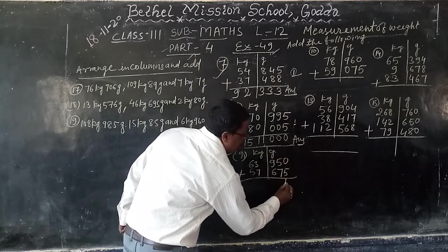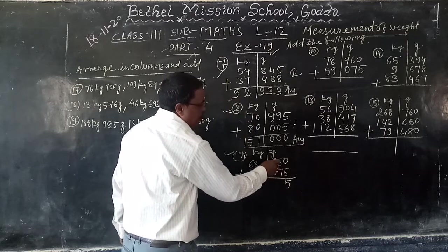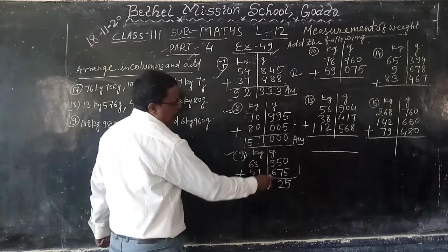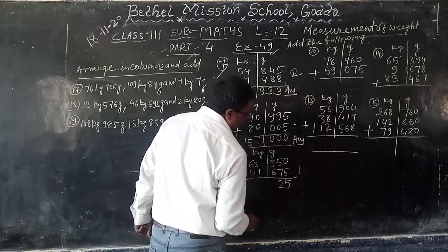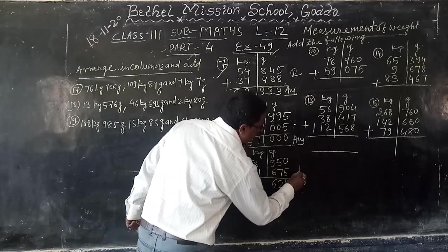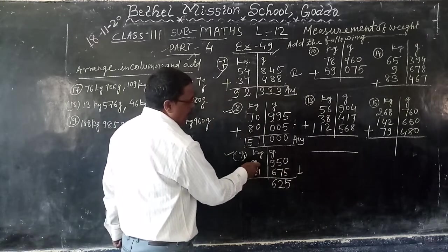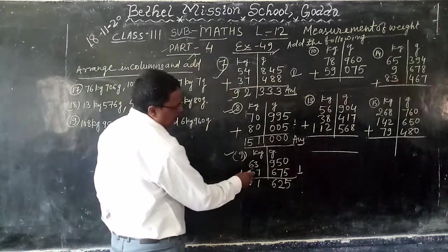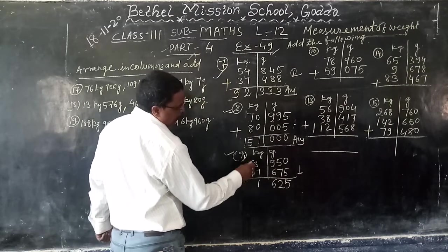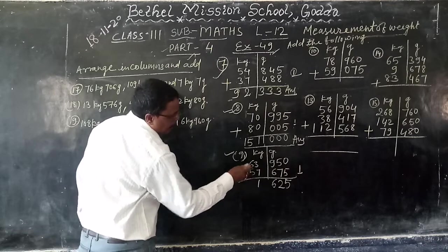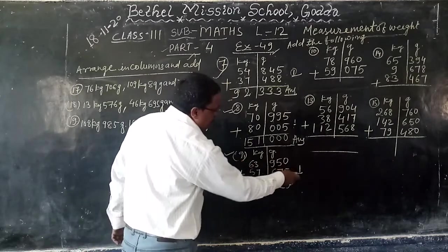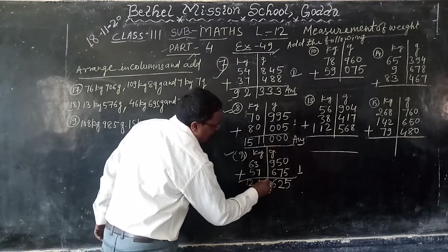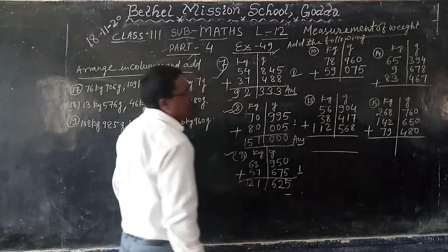0 plus 5, 5. 5 plus 7, 12. 2 right, 1 in hand. 9 plus 6, 15, plus 1 carry, 16. 6 right, again 1. 3 plus 7, 10, plus 1 carry, 11. 6 plus 5, 11, plus 1, 12. 21 kg, 625 grams.